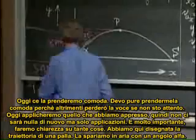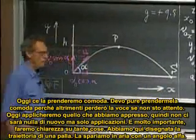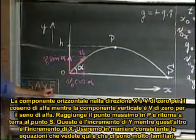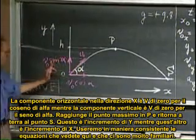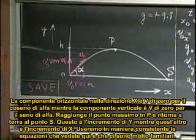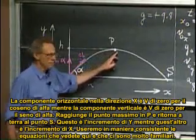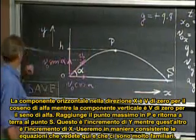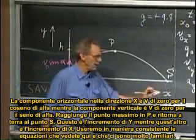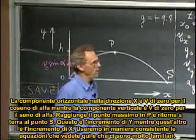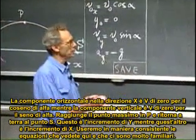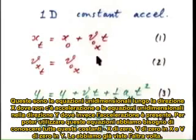We have here a trajectory of a golf ball or a tennis ball. We shoot it up at an angle alpha. The horizontal component in the x-direction is v0 cosine alpha, and the vertical component is v0 sine alpha. It reaches the highest point at P, and it returns to the ground at point S. We're going to use heavily the equations you see here — the one-dimensional equations in the x-direction where there is no acceleration, and the one-dimensional equations in the y-direction where there is acceleration.